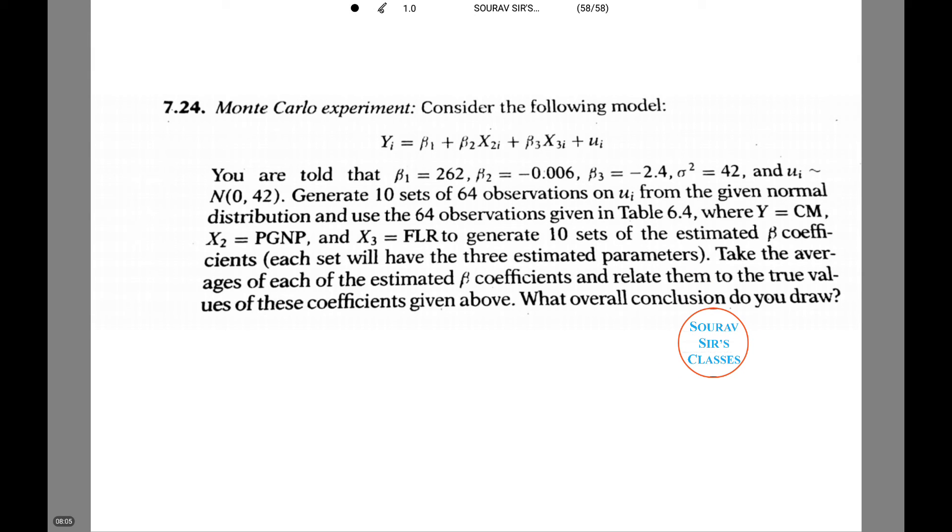Next we have a very important question: Monte Carlo experiment. We have to consider the following model: yi equals β1 + β2·x2i + β3·x3i + ui. We are told that β1 equals 262, β2 equals -0.006, β3 equals -2.4, σ² equals 42, and ui equals N(0,42).